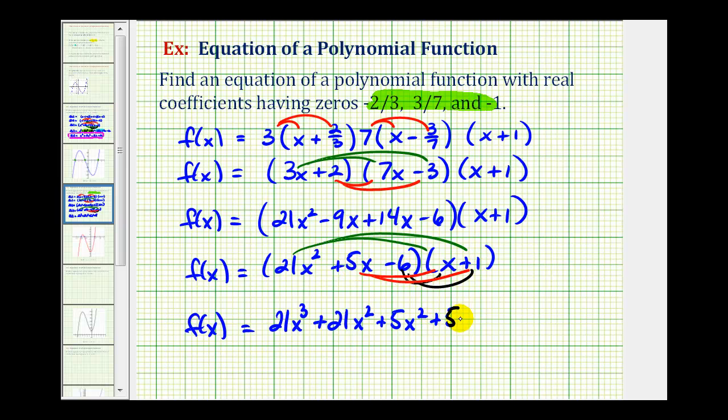And then we have -6 times x, that's -6x. So we can write minus 6x. And then -6 times positive 1, that's -6 or minus 6.